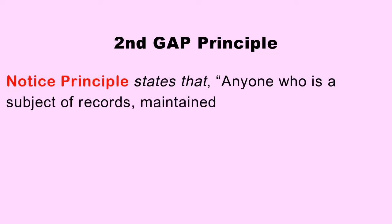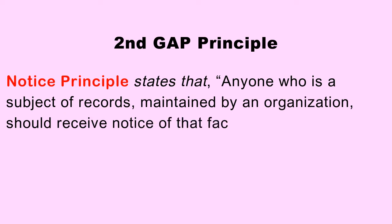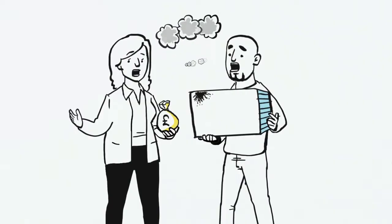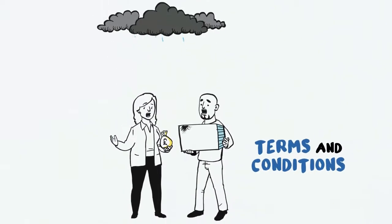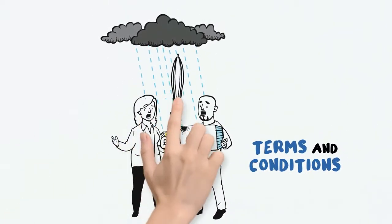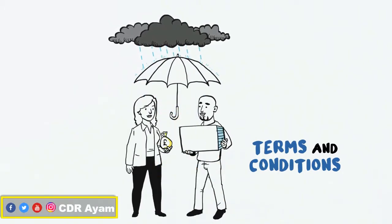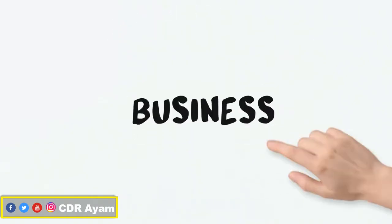The second principle is the Notice principle, which states that anyone who happens to be a subject of records being maintained by an organization should receive notice of that fact, as well as have access to the privacy policies and procedures followed by that organization. One practical implementation of the notice principle is the terms and conditions provided to you when signing up for any social media platform.